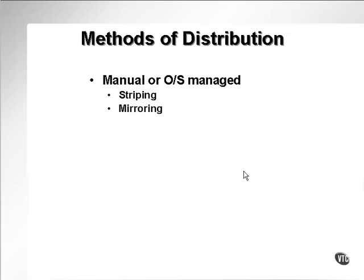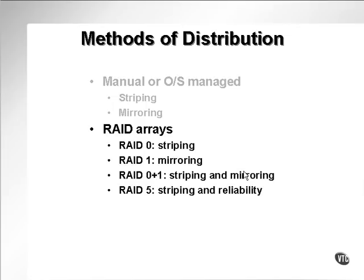Methods of distribution: you can do manual or OS managed type distribution. You can use striping and mirroring. Striping is where you take files and you split them into pieces and you operate on the different pieces at the same time. Mirroring is where you duplicate I.O. structures — in other words, you make multiple copies of files and databases.